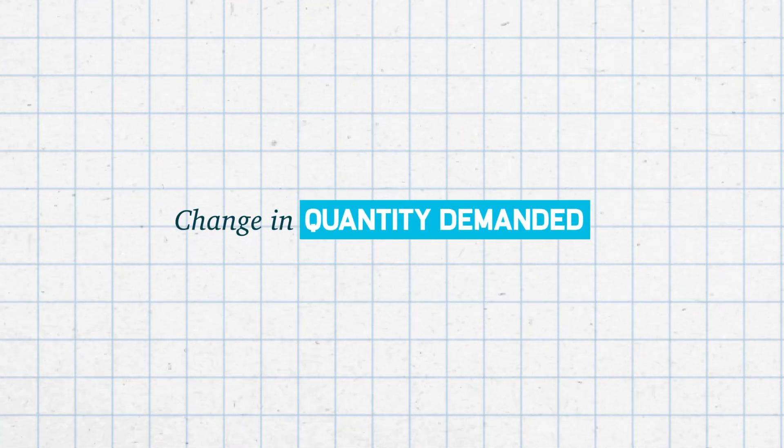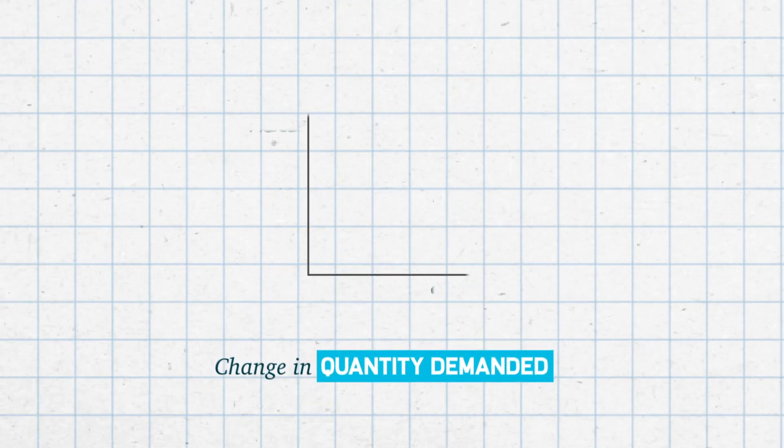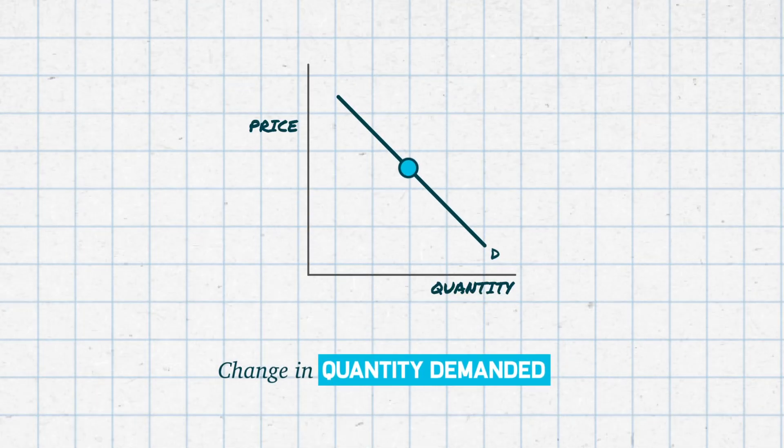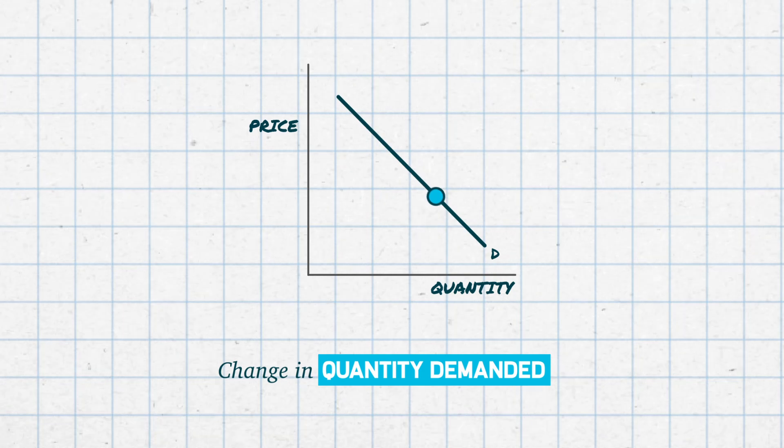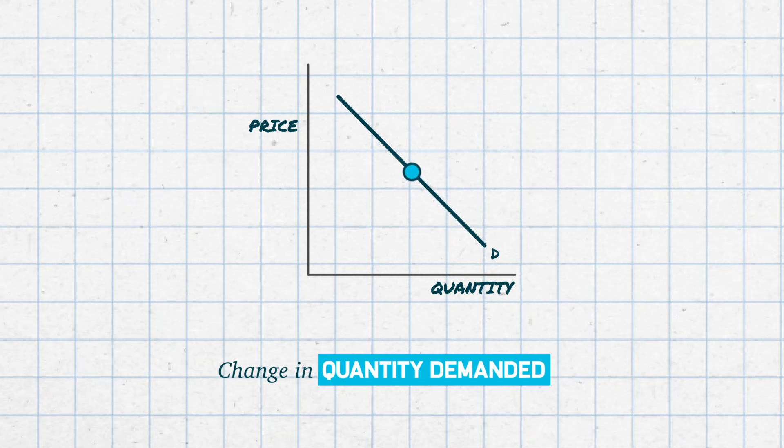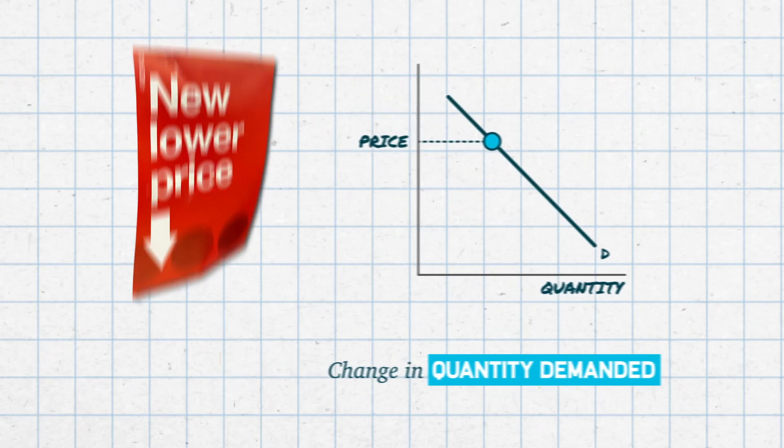A change in quantity demanded refers to a movement along a fixed demand curve. That's caused by a change in price.